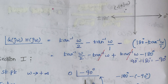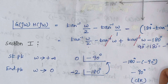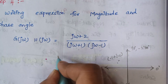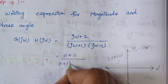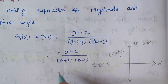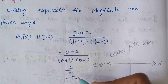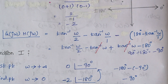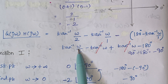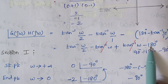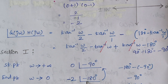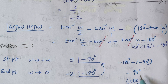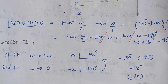Next we substitute ω equal to 0. Here 0 plus 2 divided by 0 plus 1 and 0 minus 1 gives 2 divided by minus 1, which is minus 2 — the magnitude value is minus 2. Substituting ω as 0 in the phase expression, tan inverse of 0 is 0, leaving only minus 180 degrees. So we have minus 180 degrees minus of minus 90 degrees, which gives minus 90 degrees — the rotation is clockwise.